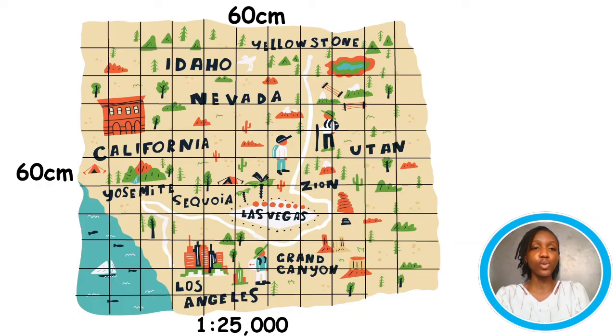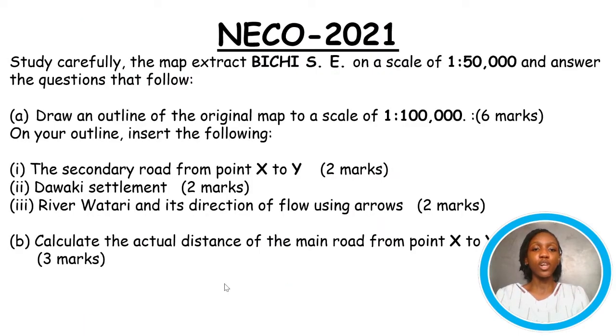You're only going to be asked to indicate some features on the map in your new diagram. So, let's take an example from NECO 2021. Study carefully the map extracts on a scale of 1 ratio 50,000 and answer the questions that follow. Draw an outline of the original map to a scale of 1 ratio 100,000. On your outline, insert the following. The secondary road from point X to Y, Dawaki settlement, river Watari and its direction of flow using arrows. And B, calculate the actual distance of the main road from point X to Y.